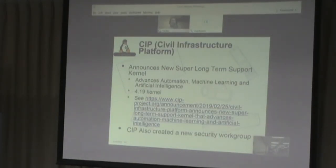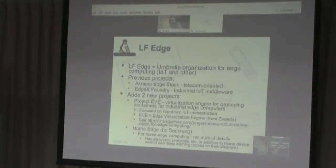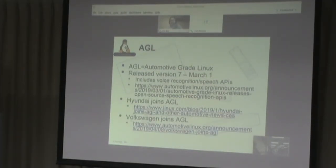LF Edge is the Linux Foundation getting into IoT and edge computing — an umbrella organization to take in a bunch of edge computing projects. AGL released a new version in March. Hyundai had joined AGL, and most recently in April, Volkswagen has joined AGL — they're continuing to get additional members. And Microsoft — who was not always a big fan of Linux — continues to embrace it. Microsoft announced Windows Subsystem for Linux 2, WSL2, and Microsoft will actually be shipping a version of the Linux kernel with Windows 10. That kind of blew my mind. Azure has also supported Linux guests for a long time, and Azure cloud developers are actually active in the Linux kernel community.